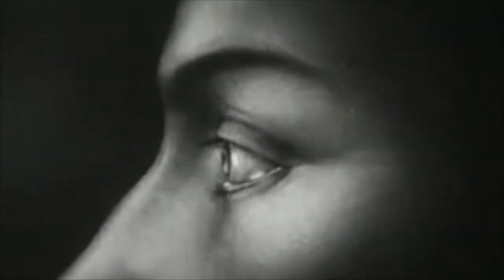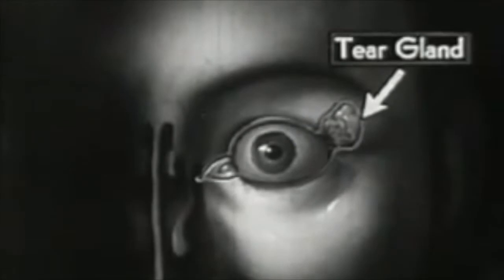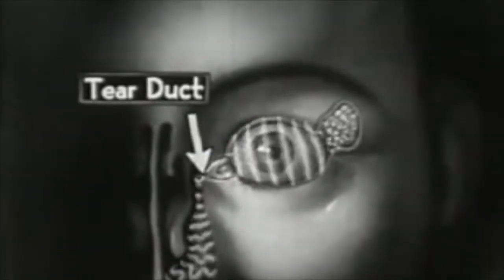Another important safeguard to the eye is the tear gland which secretes the tear fluid. This is an effective germicide which drains through the tear ducts into the nose after flushing and cleaning the entire eye surface.